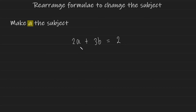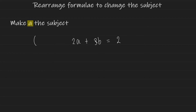Let's take a look at another example: 2a plus 3b equals 2. We're still trying to make a the subject. There's a 3b added onto the a and a 2 multiplied onto it. From our knowledge of solving linear equations, we should always get rid of the plus or minus first — in this case the plus 3b. I'm going to perform the opposite operation, which is minus 3b on both sides.